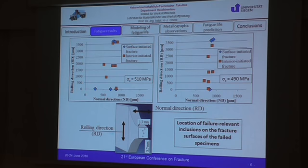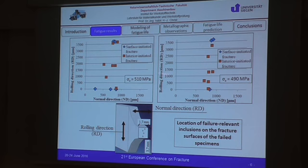Here you can see the results relating to the position of the failure-relevant inclusions on the fracture surfaces of our fatigue specimens. The inclusions tend to concentrate in the center of the specimen along the normal direction. These results also confirm findings of different authors that report that the amount of inclusions failing on the surface decreases with stress amplitude.